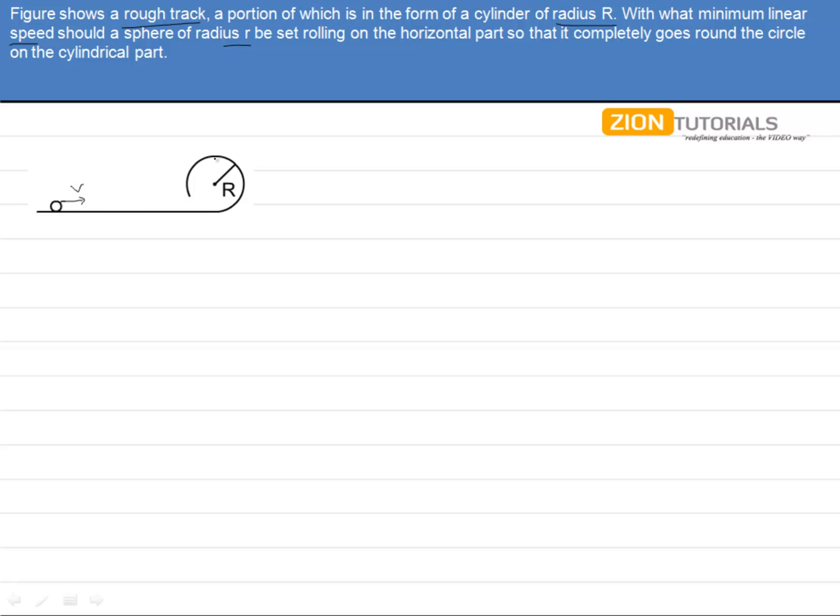Now we all know that if it is able to cross this topmost point, then it will be able to complete the circle. This we have done in the chapter on circular motion. So we need to frame the condition such that it is able to cross this topmost part.